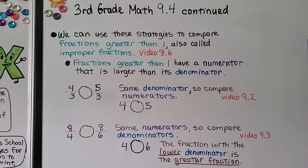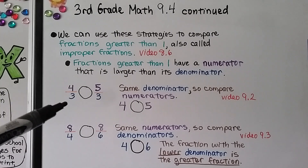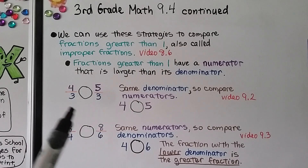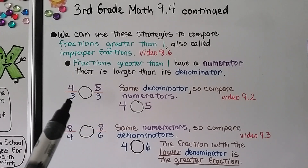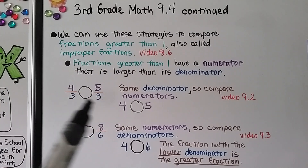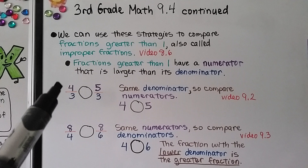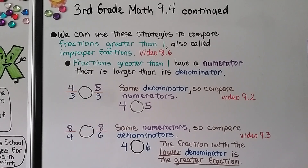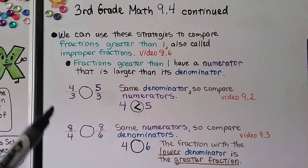We can use these strategies to compare fractions greater than one — those are also called improper fractions. We learned about those in video 8.6; there will be a link in the description. Fractions greater than one have a numerator that is larger than its denominator. These have the same denominator, so we can compare numerators. We have three as a denominator in both fractions, so we look at the four and the five — four is less than five, so four-thirds is less than five-thirds.